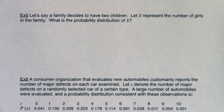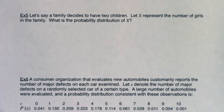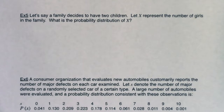For example five, it says: let's say a family decides to have two children. Let x represent the number of girls in the family. What is the probability distribution of x?